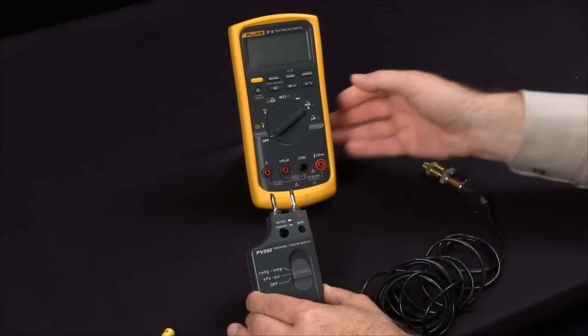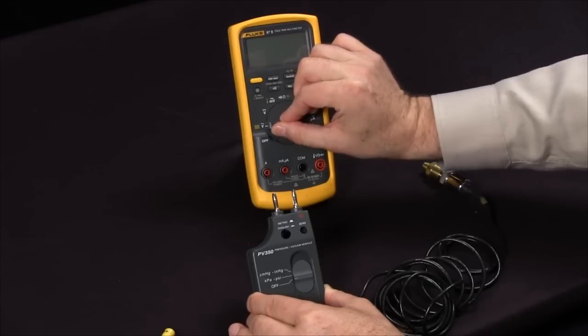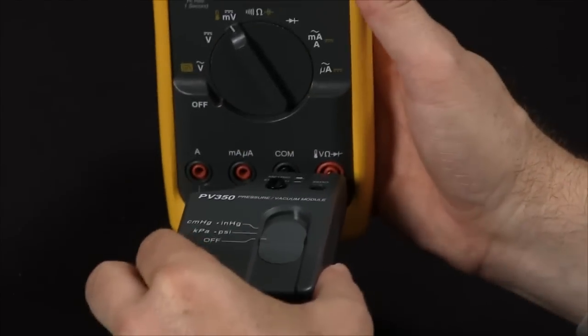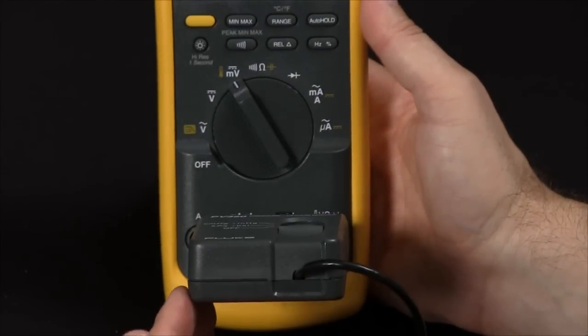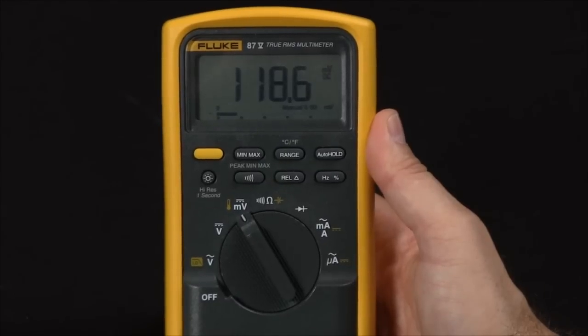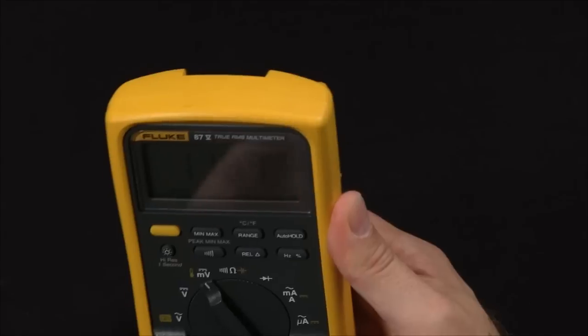We will turn this to off. Simply turn your industrial multimeter to a millivolt setting and insert the PV350 into your common and voltage jacks. You are expecting about 100 millivolt offset to indicate that the batteries are working within the module.